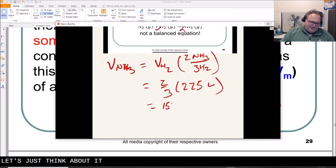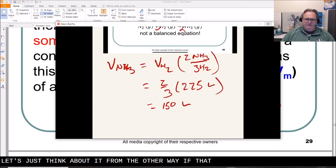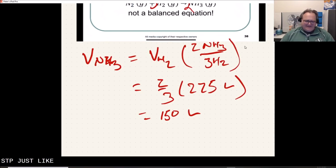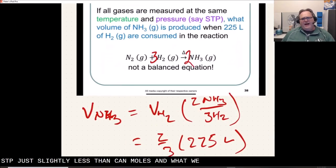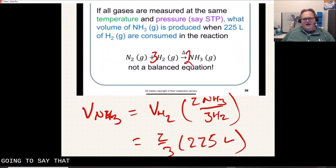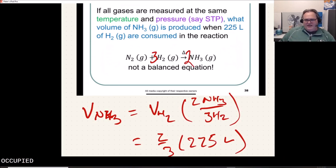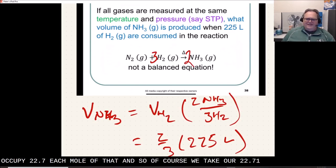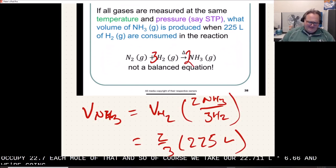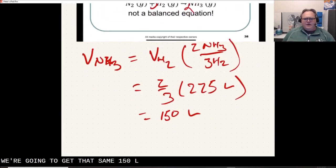And so let's just think about it from the other way. If that volume of 225 liters represents at STP just slightly less than 10 moles, then what we would have is the reaction is going to say that out of that 10 moles of H2, we're going to be able to create two thirds of 10 moles, which is about 6.66 moles of ammonia. And then those 6.66 moles each occupy 22.7 liters, each mole of that. And so, of course, we take our 22.711 liters multiplied by 6.66 and we're going to get that same 150 liters.